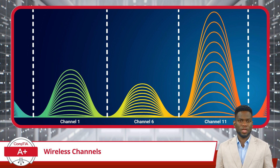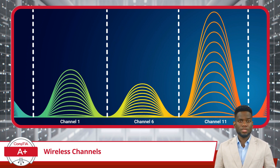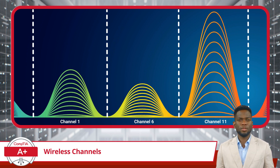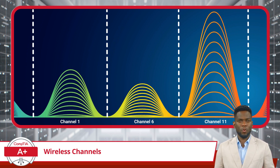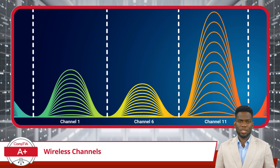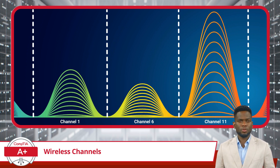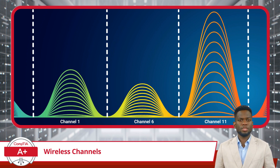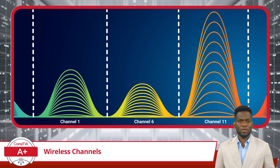Imagine tuning into a radio station where each station is set to a specific frequency for clear reception. Similarly, in wireless networking, a wireless frequency channel is a designated band of frequencies used for transmitting and receiving data, each separated in order to prevent interference and ensure smooth communications.